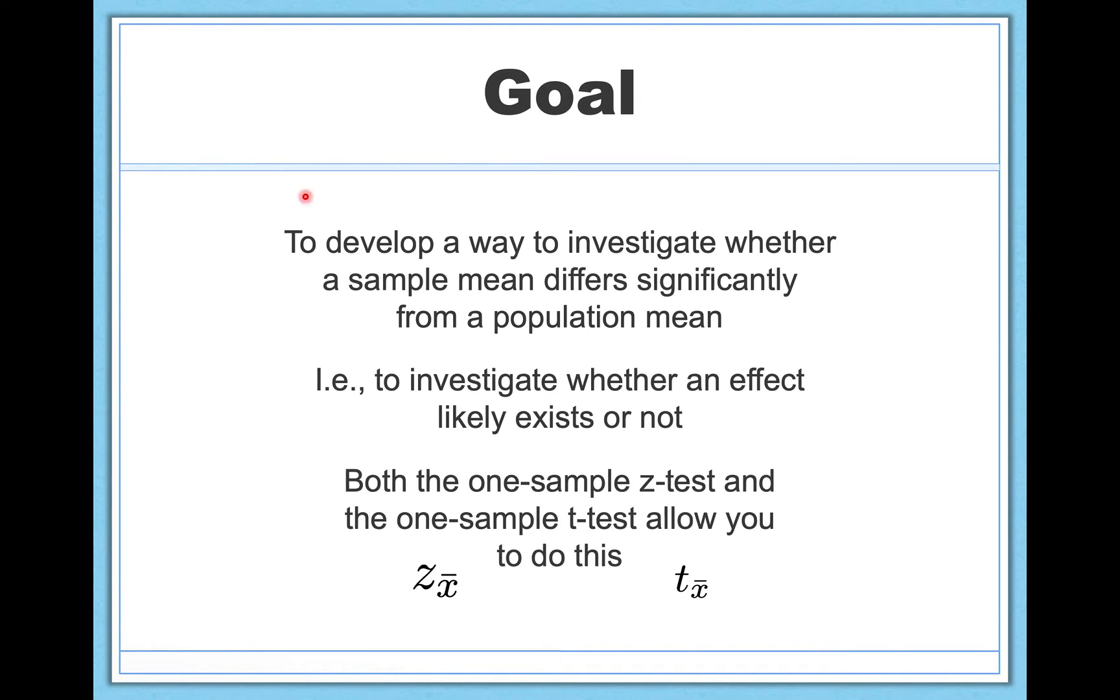Now these are very similar. You even see similar sorts of notations here, z sub x-bar and t sub x-bar. These subscripts here, x-bar, basically refers to our goal. We are investigating whether a sample mean, x-bar, differs significantly from a population mean. So there's a lot of similarities between the one-sample z and t, but there's one key difference.